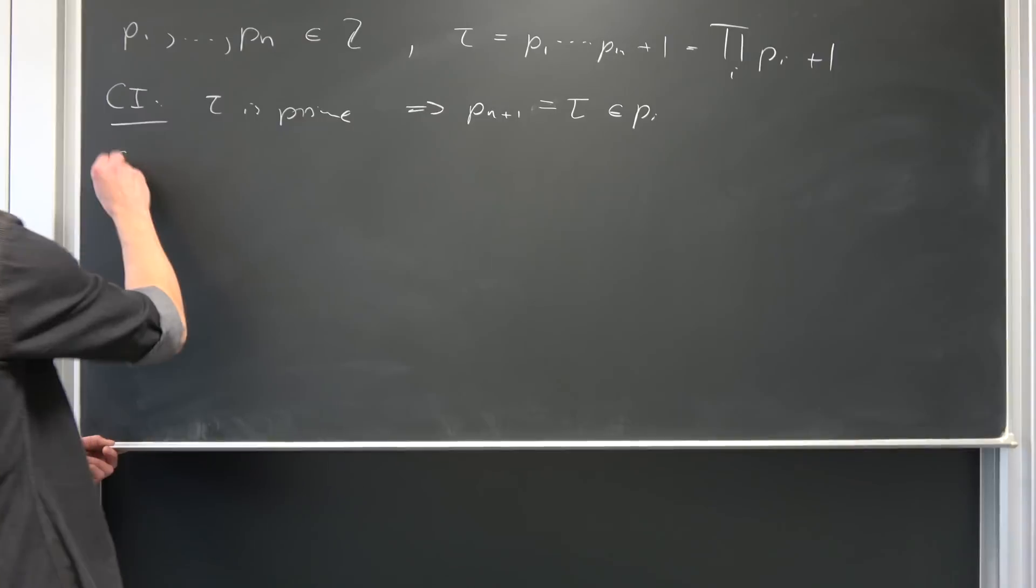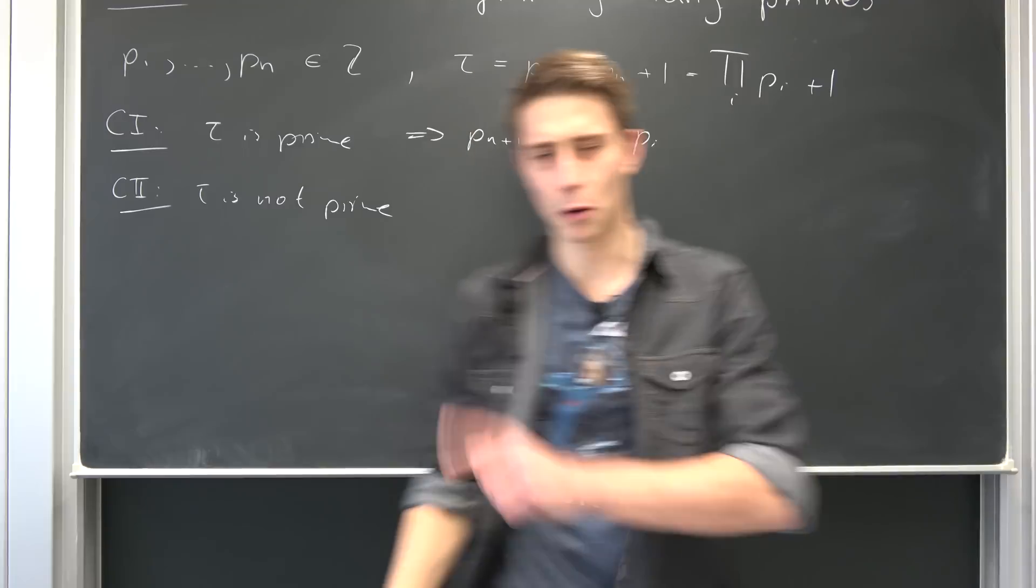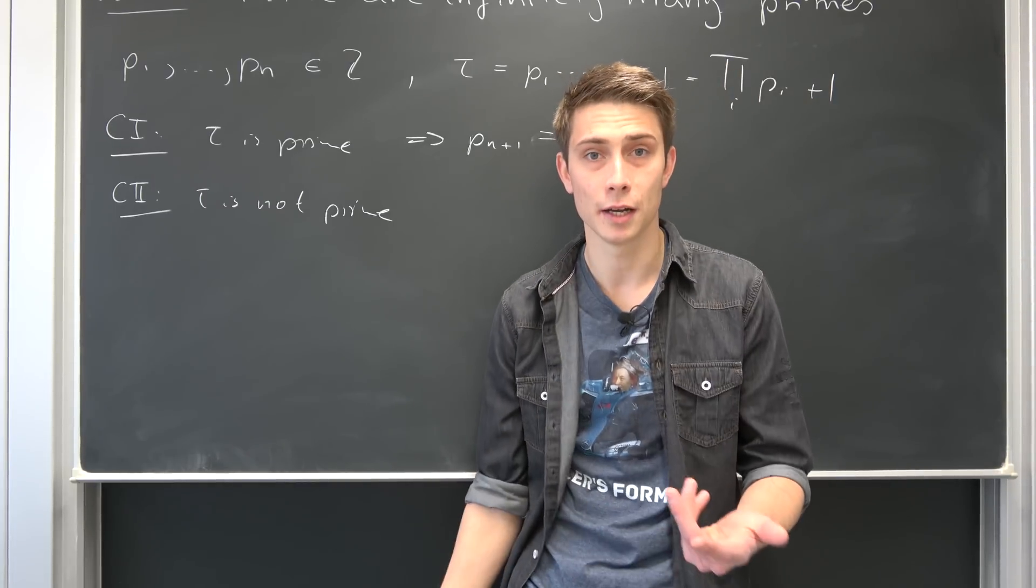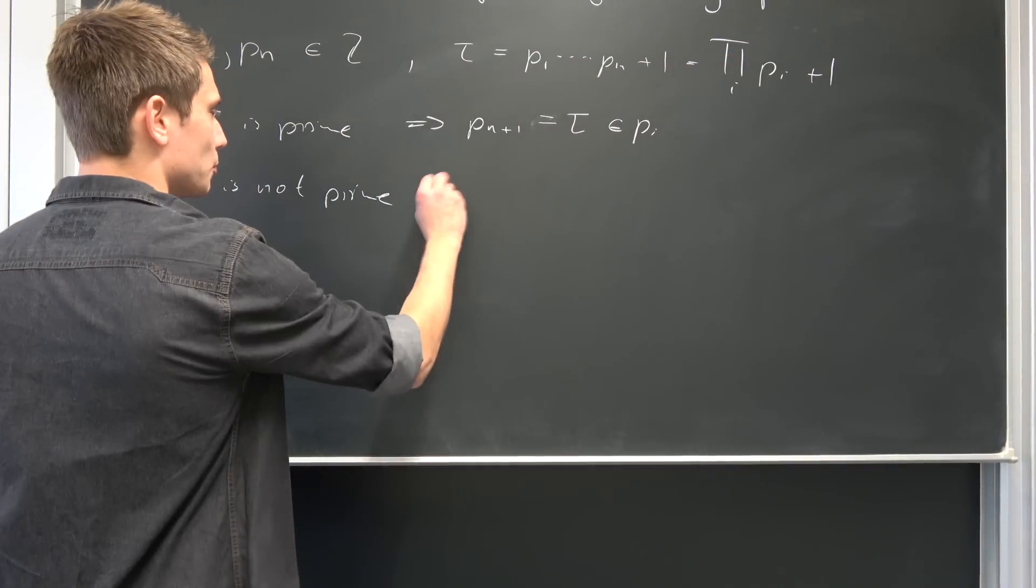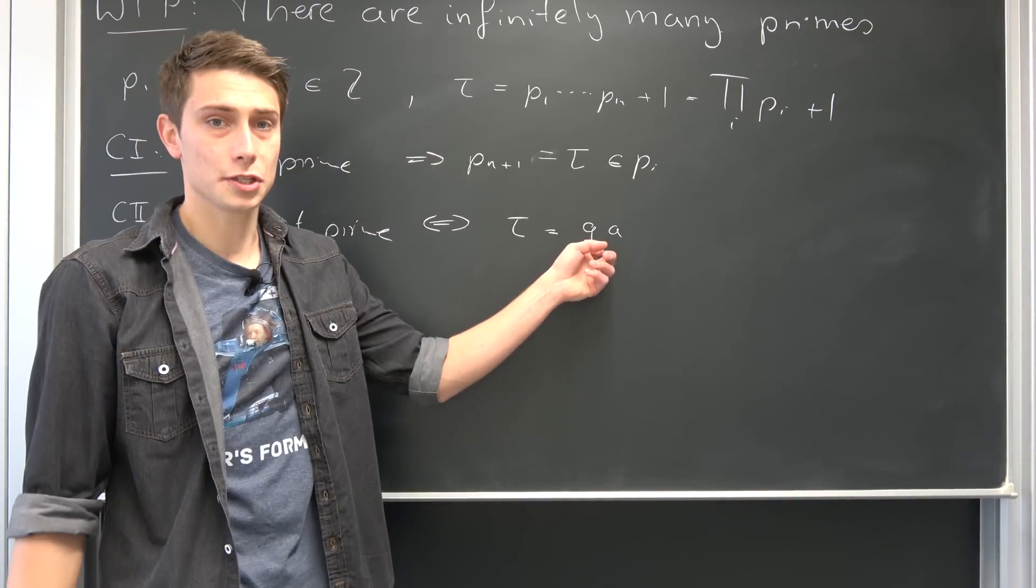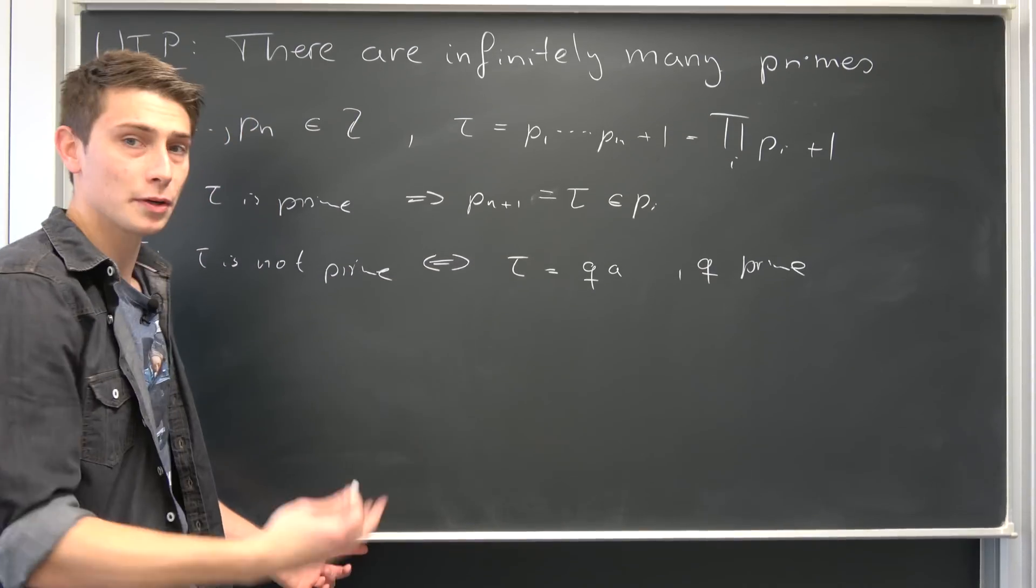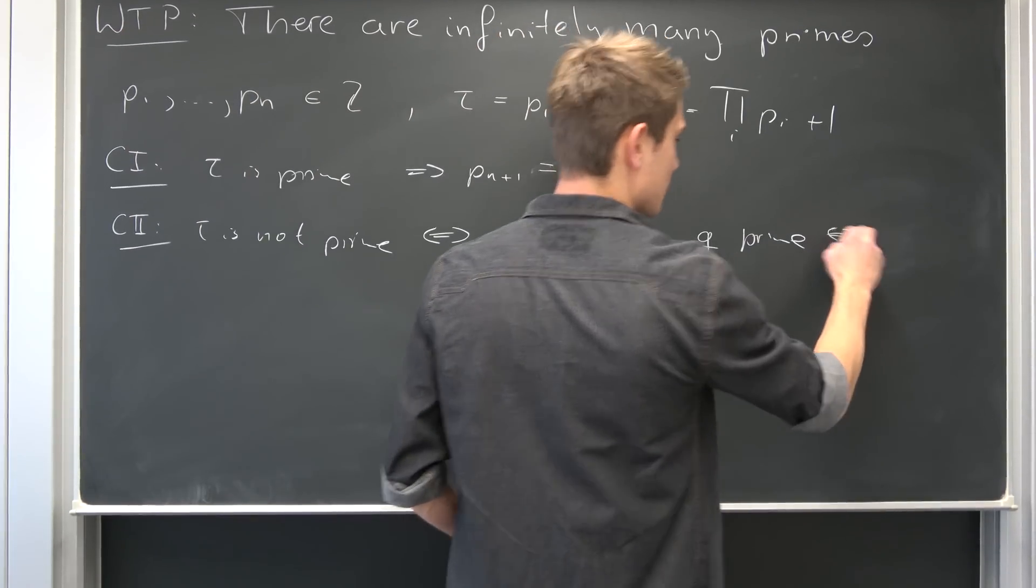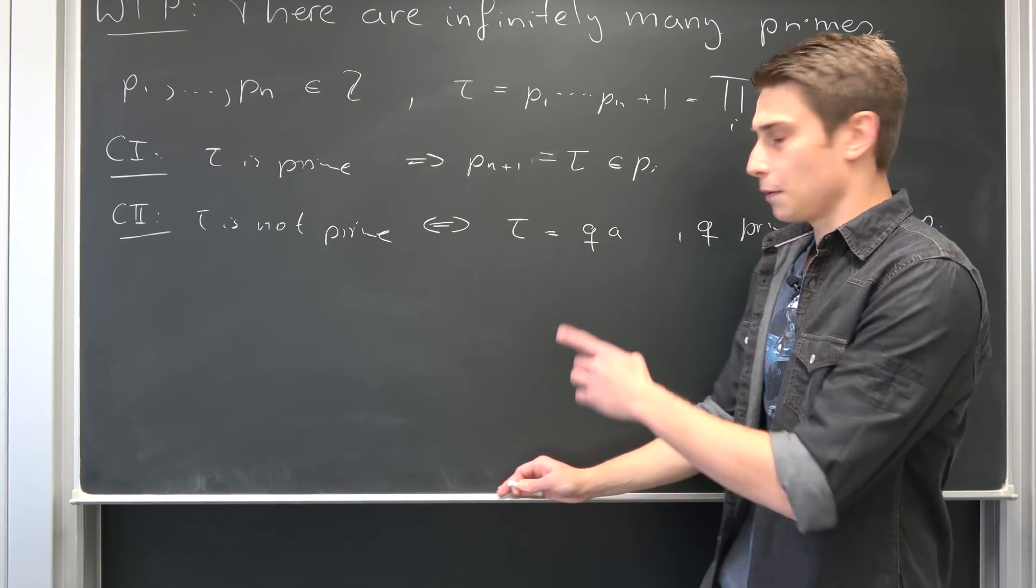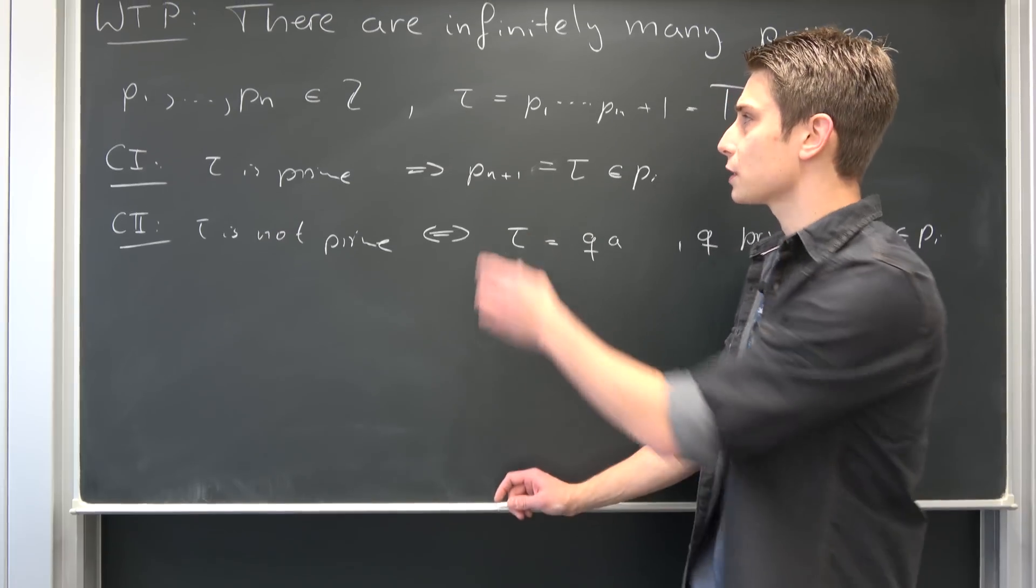Case 2: tau is not prime. Well, if tau is not prime, then that means it's divisible by some prime factor. For example, 6 is divisible by 2 and 3. Yeah, those are both prime numbers. So that also means that tau is equal to q times a, for example, where q is just a new prime number. But if it is a prime number, we have to assume that it is out of this list right here. So that's equivalent to saying that q is element of our p's. And a is element of the integers somehow. But if our q is element of all the prime numbers, that also means that q would divide this whole product right here.